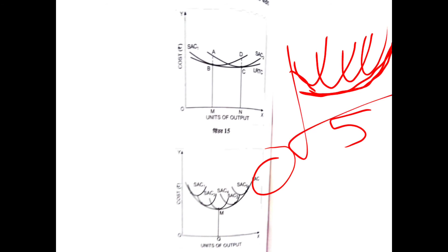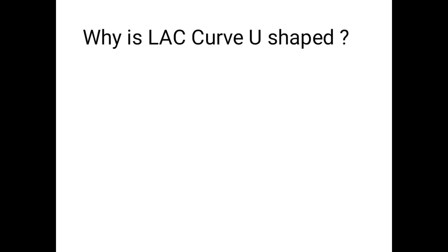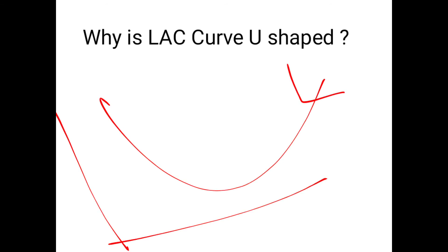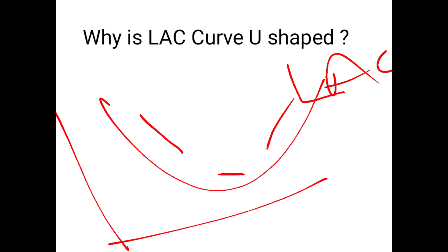The short run average cost curves are enveloped by the long run average cost curve. Starting at 0 on the x-axis, as you begin to produce, the cost behaves in a specific way — the short run average cost curve starts at a higher cost and comes down faster than you might expect. This represents the cost of production over different output levels.